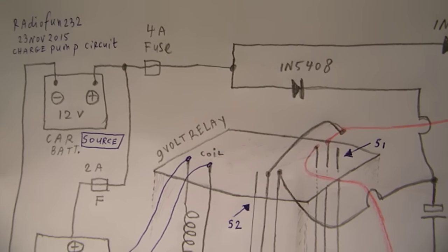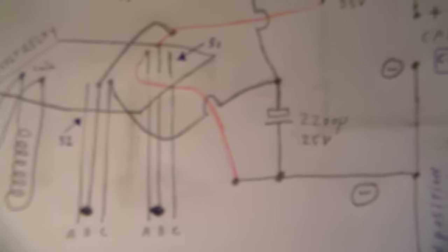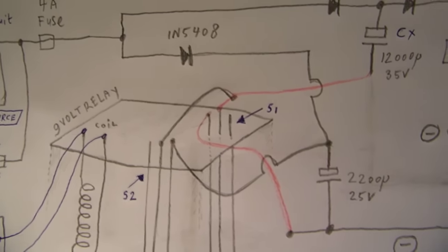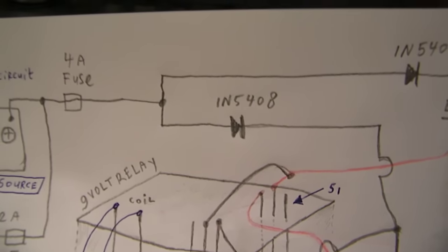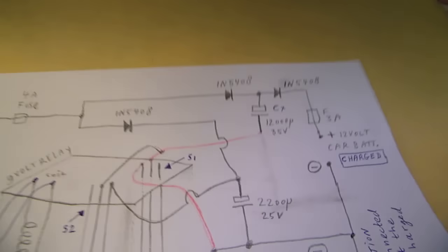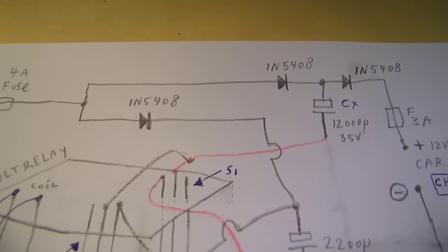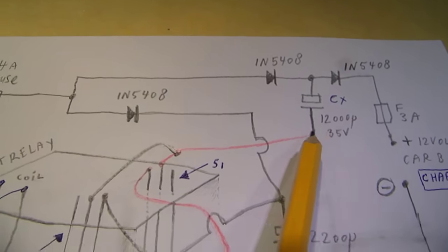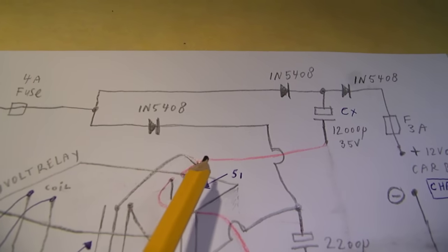One capacitor, this capacitor 2200 microfarad, is charged via this diode. And the other cap is also charged, but there are some things to tell. This cap is charged via the diode through the relay contact.